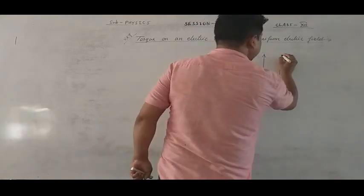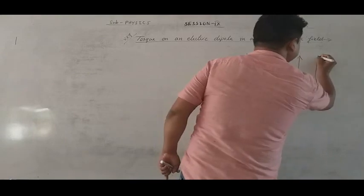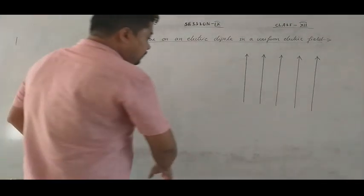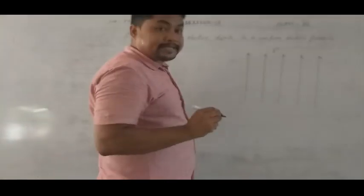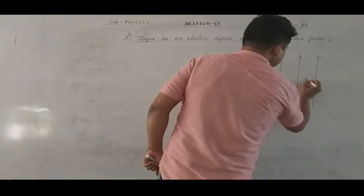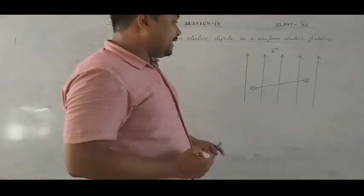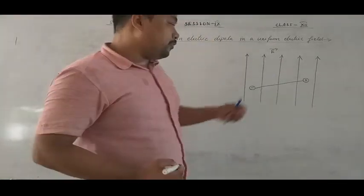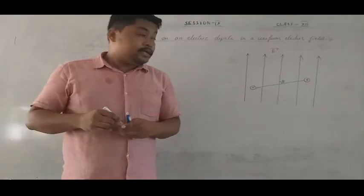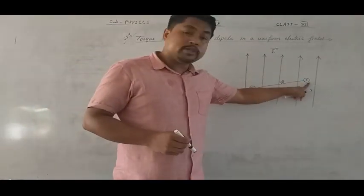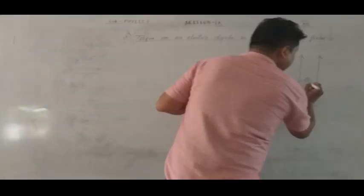We have parallel lines representing the electric field, E-vector. An electric dipole is placed with a negative charge and a positive charge. The line joining the charges is the electric dipole axis. This dipole axis makes an angle with the electric field. The electric field acts on the positive charge.